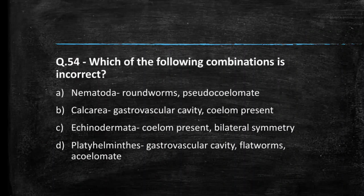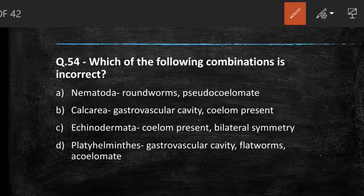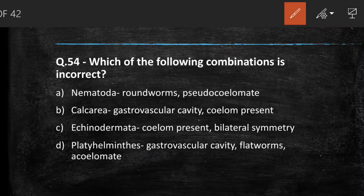Next: which of the following combinations is incorrect? Options include Nematoda-roundworm-pseudocoelomate; Calcarea-gastrovascular cavity-coelom present; Echinodermata-coelom present-bilateral symmetry; Platyhelminthes-gastrovascular cavity-flatworm-acoelomate. Options A, C, and D are entirely correct. But option B is incorrect: Calcarea belongs to Porifera, and in Porifera, coelom is not present. So the answer is option B.